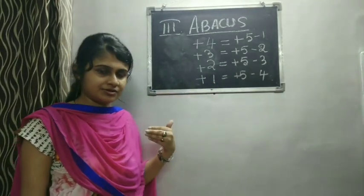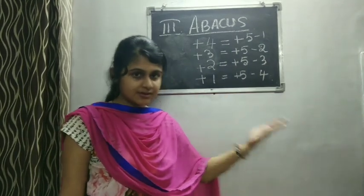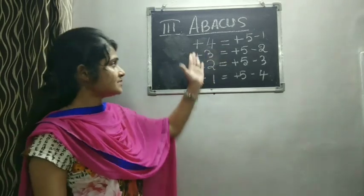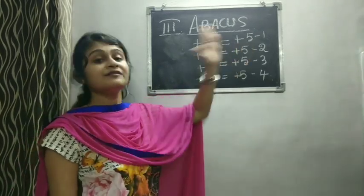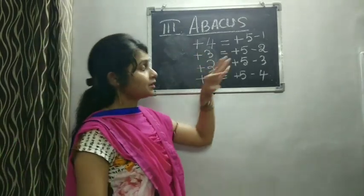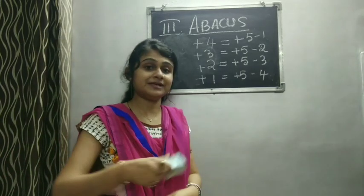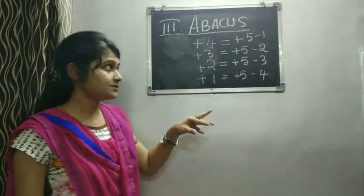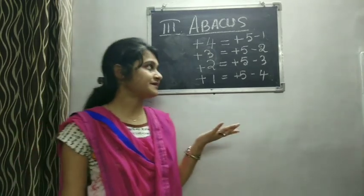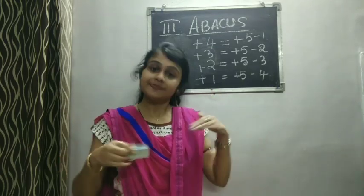Then we have the extension - 10's place, 100's place, 1000's place. We have already learned in 10's place how we are going to do: just add a zero. So the common friend is now 50, not 5. The formulas become: plus 40 equals plus 50 minus 10; plus 30 equals plus 50 minus 20; plus 20 equals plus 50 minus 30; plus 10 equals plus 50 minus 40. This is the basic formula of small friend.